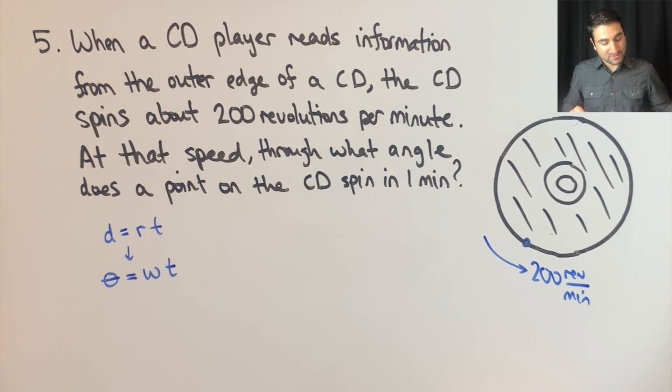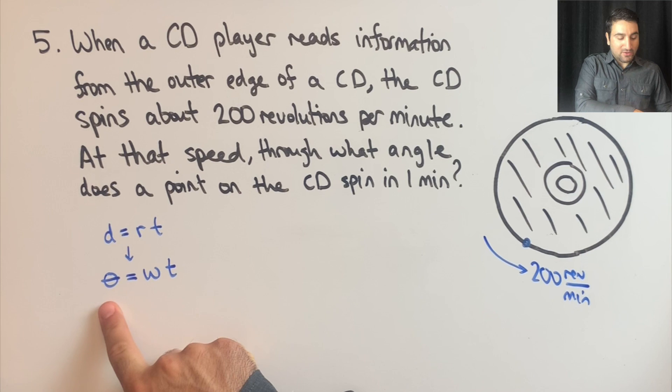So omega times time. If we want to calculate the angle, the revolutions traveled, it's going to be the rate times the time.